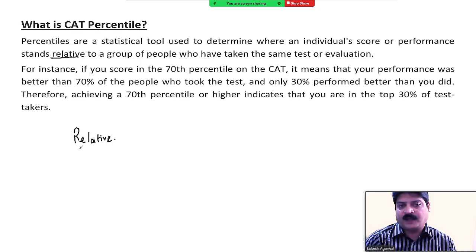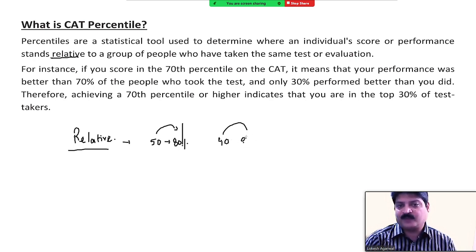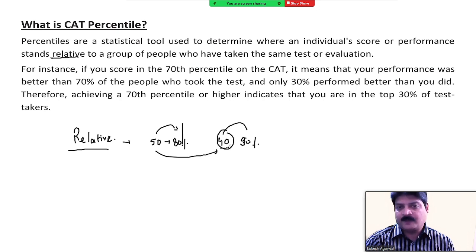Percentile does not mean how many questions you got correct or how many marks you will get — it changes every year. It is basically based on the performance of other candidates in the same paper. You might get 50 marks and get 80 percentile, and in the same paper in another slot you might get 40 marks and get 90 percentile the next year.